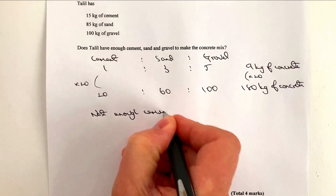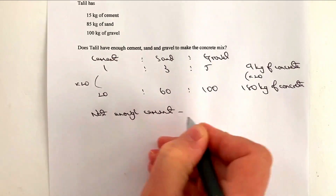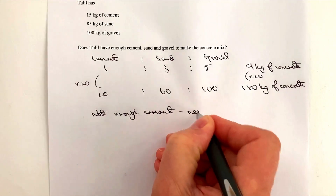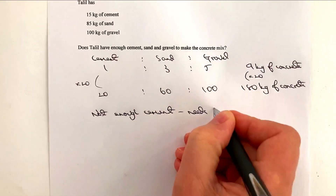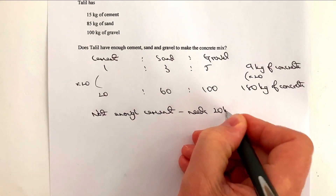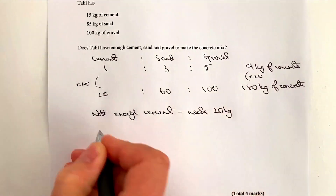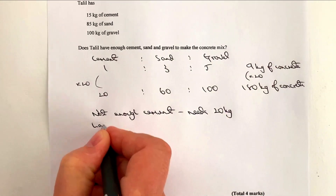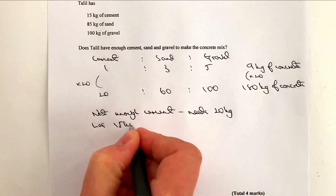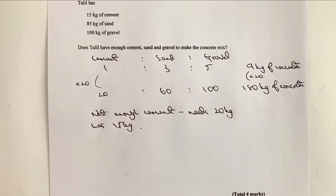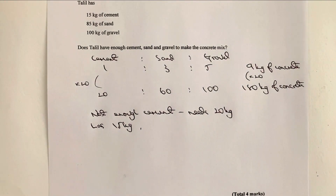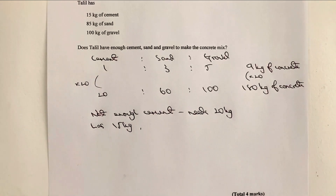He needs 20 kilograms of cement but only has 15 kilograms. So he needs an additional five kilograms of cement. He has enough of sand and gravel, but not enough cement — so no, he does not have enough to make 180 kilograms of concrete.